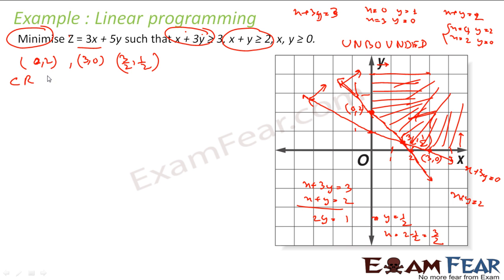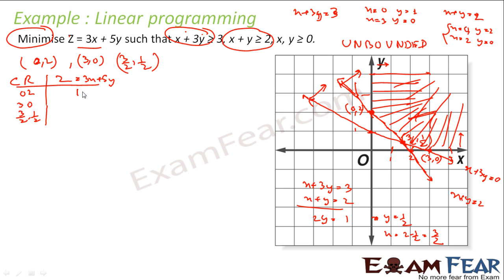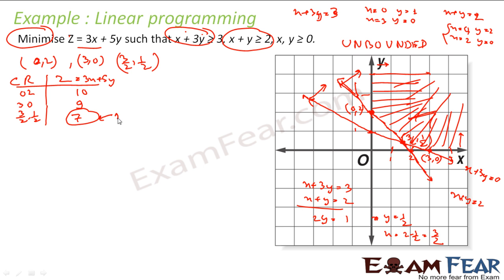Let us find the value of z = 3x + 5y at all corner points. At (0, 2): z = 3×0 + 5×2 = 10. At (3, 0): z = 3×3 + 5×0 = 9. At (3/2, 1/2): z = 3×(3/2) + 5×(1/2) = 9/2 + 5/2 = 14/2 = 7. I am looking for the minimum, so the candidate minimum value is 7. But this may or may not be the actual minima since the region is unbounded.